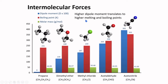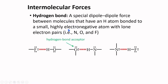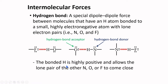Hydrogen bonding is a special dipole-dipole force between molecules that have a hydrogen atom bonded to a small, highly electronegative atom with lone electron pairs — that is, nitrogen, oxygen, and fluorine. The bonded hydrogen is highly positive because of the electronegative atom bonded to it, and this allows the lone pair of another nitrogen, oxygen, or fluorine atom to come close. Hydrogen bonding only occurs in these situations.